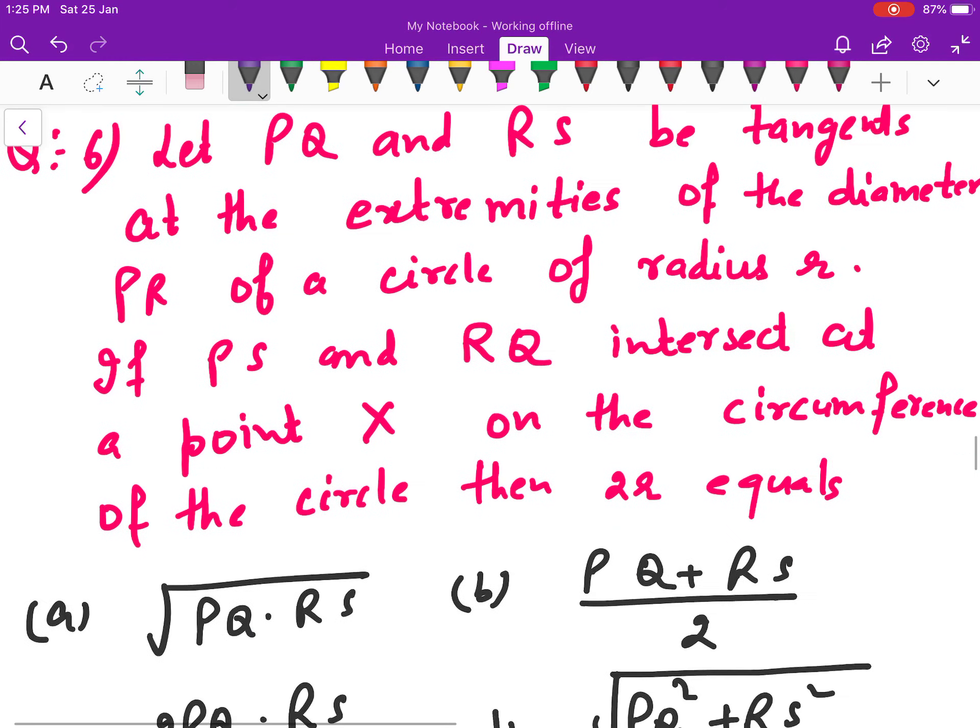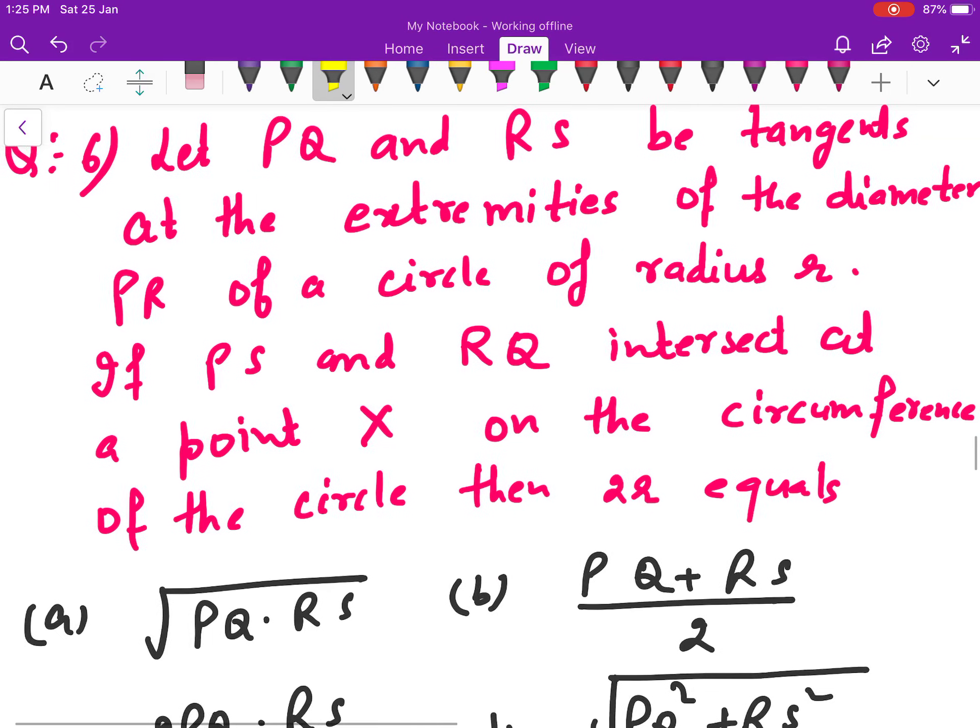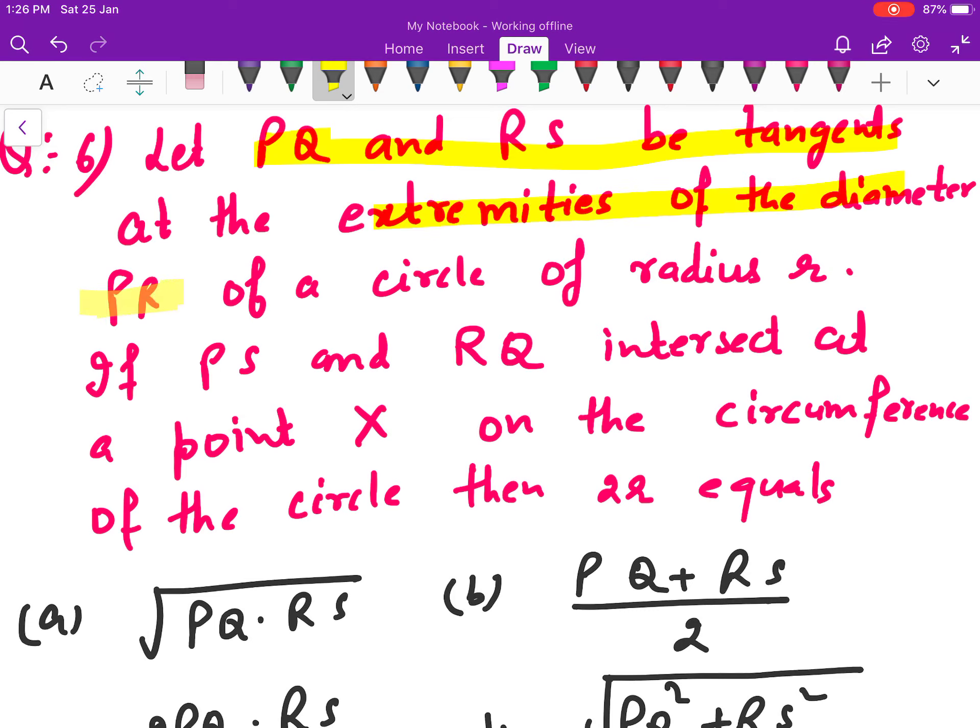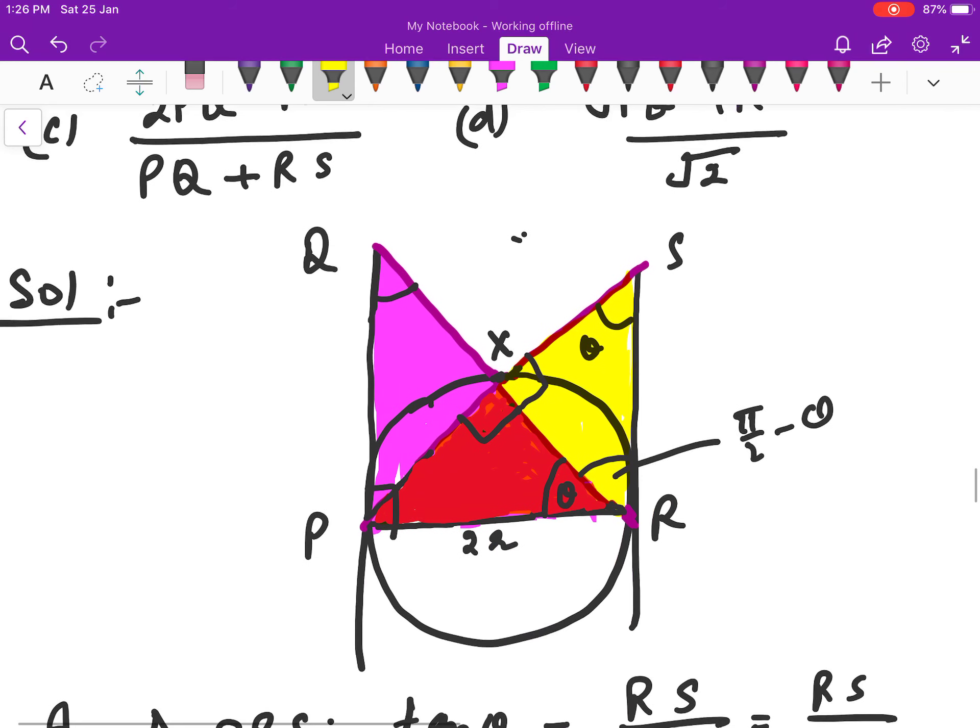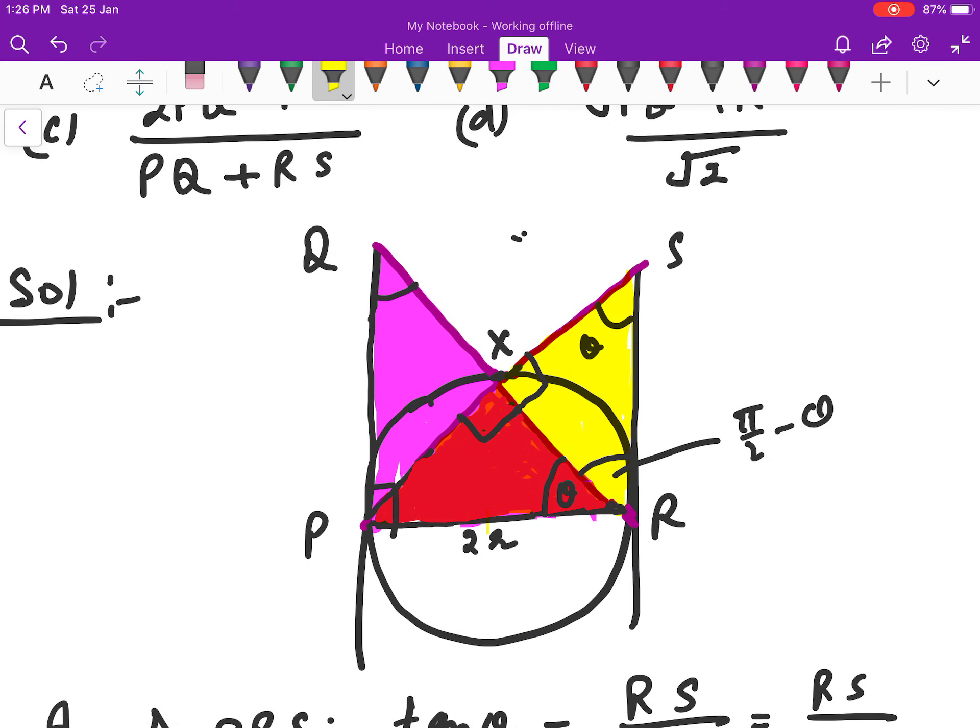Next: PQ and RS be tangents at the extremities of the diameter PR of the circle of radius R. If PS and RQ intersect at a point X on the circumference of the circle, then find the angle. First, make a circle with radius R. We made two tangents, one is PRS and one is PQ tangent. This angle is 90 degrees. This angle PRS is theta suppose, so this is theta, and this is 90, so this will be π/2 minus theta, which means this angle will be theta.